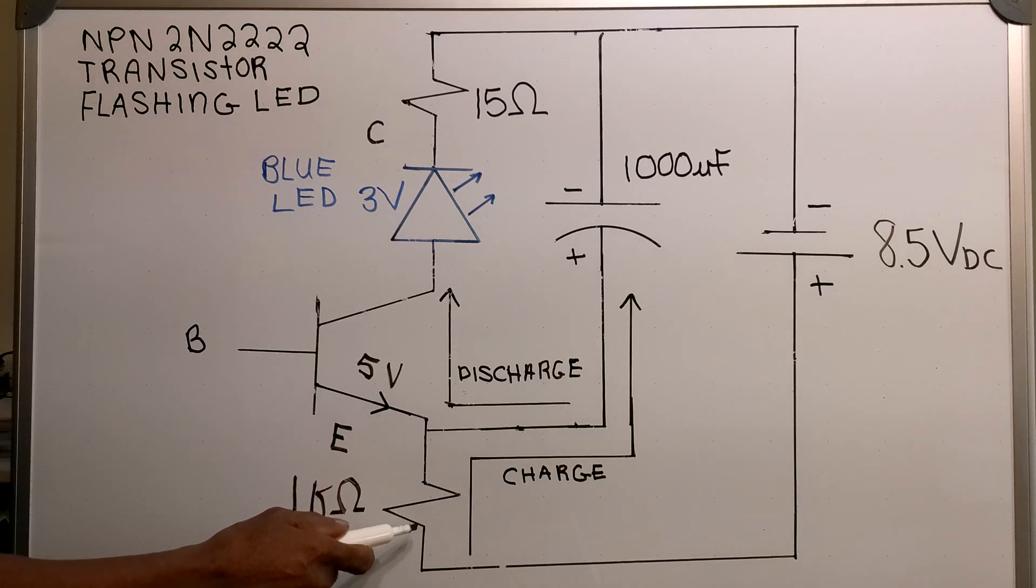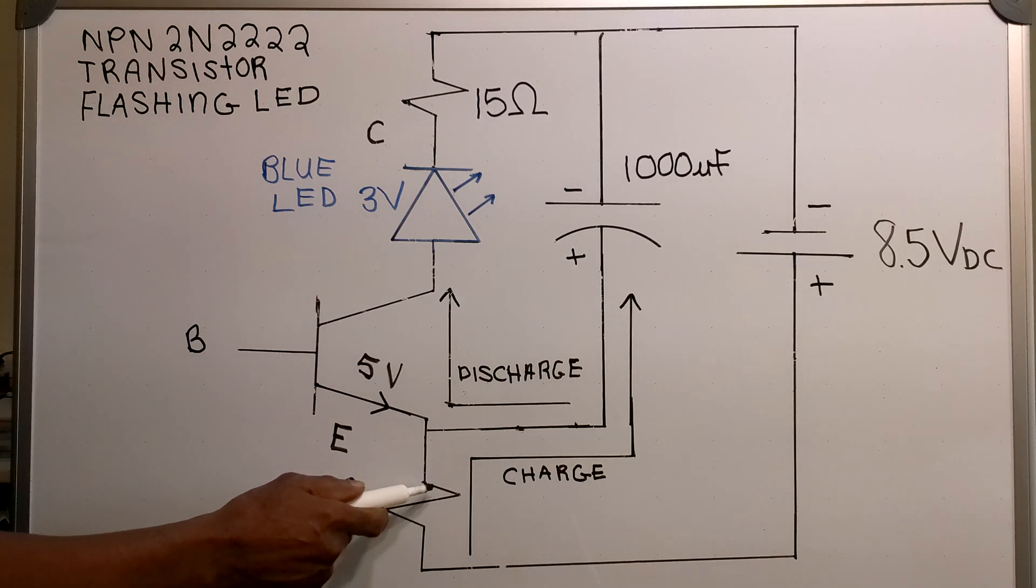At the same time, a small amount of current is also flowing through the transistor from the 1k ohm resistor.